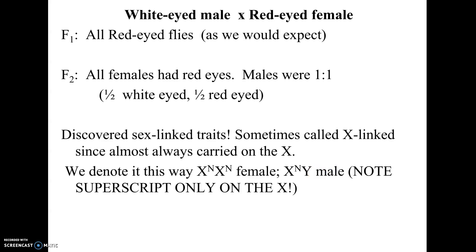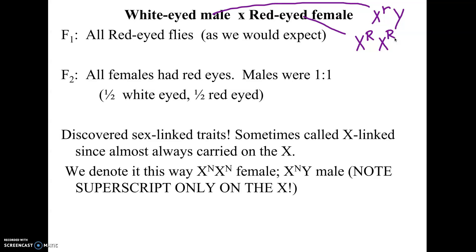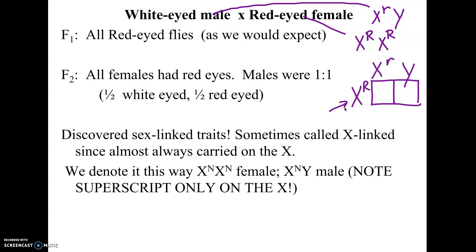Let's take Morgan's cross and show what was really happening. His white-eyed male was X^r Y (white is recessive) and his red-eyed female was X^R X^R — homozygous, because the white-eyed fly was a rare mutant so most flies were homozygous for red. In the Punnett square, all offspring got red eyes, which matches what he observed in the F1.